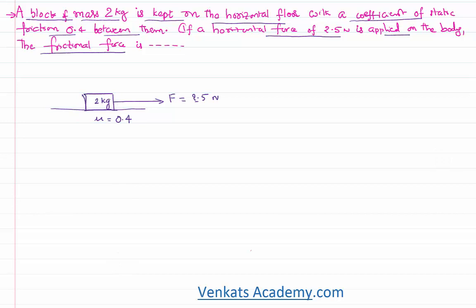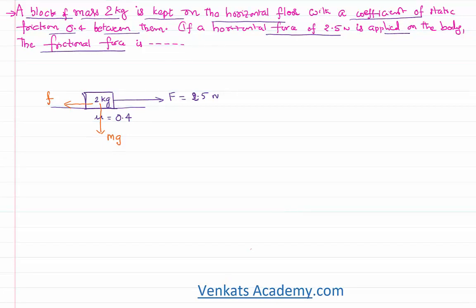Let us analyze and solve this problem. Whenever there is friction, the frictional force tries to oppose the relative motion — that is the direction of the frictional force acting. The weight of the body always acts downward, and the floor applies a normal reaction. We know that frictional force is directly proportional to normal reaction, and we eliminate the proportionality with a constant called the coefficient of friction.